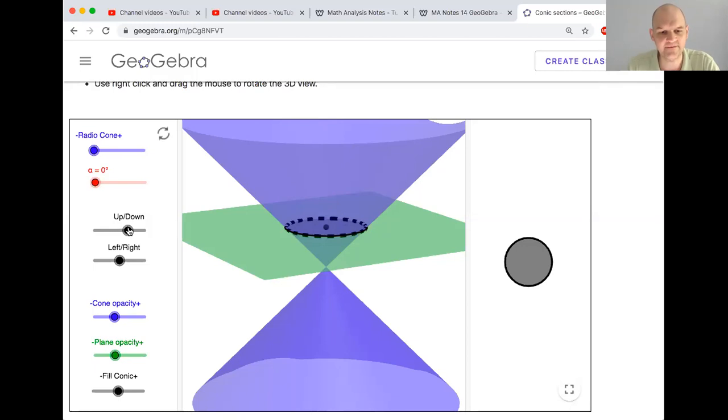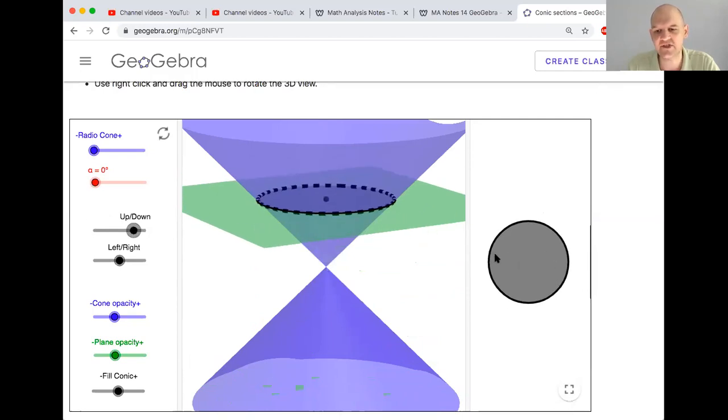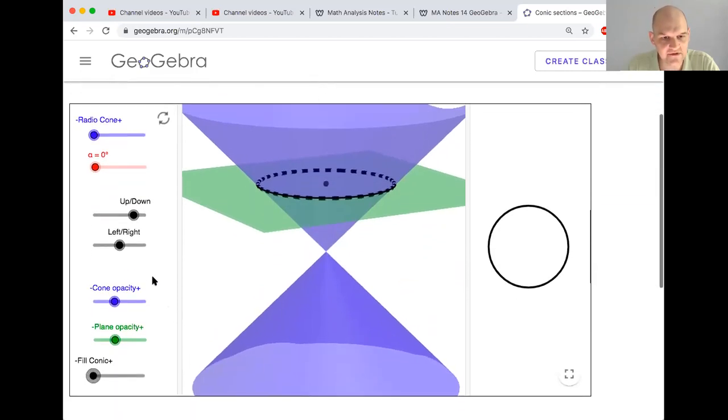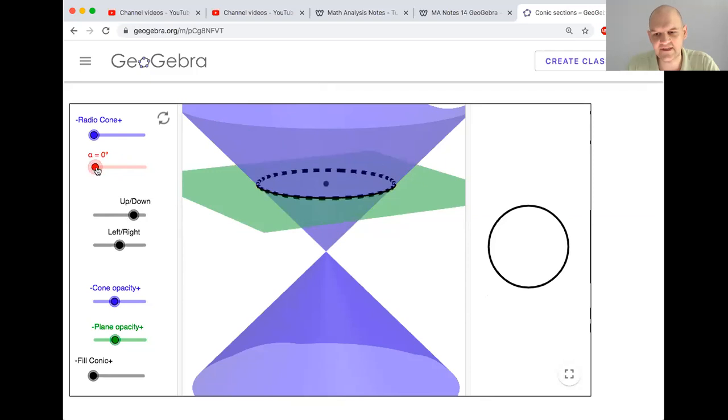And what we're going to do is we're going to take a plane and we're just going to pass it through the cones. And you can see on the right hand here, this is showing you the intersection. It's what the intersection of the plane, this green thing, and the cone will look like. And we can see here, it's a circle. And right now, the angle at which this plane is tilted is zero. And if I tilt it, you can see things happen.